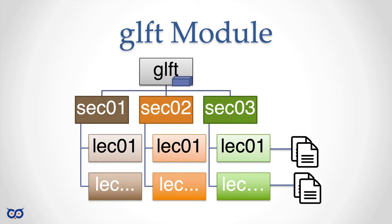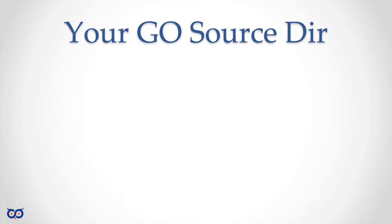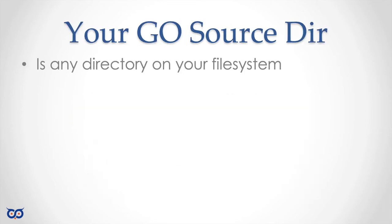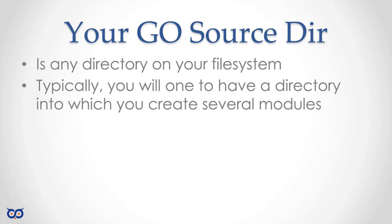When you clone the code for this course you'll see a module file. If you want to create your own directory, you can create a module file too — I recommend using modules. Your source code can be placed anywhere on your file system. Typically you'd want a parent directory containing several modules — for example, one for this course's code and another for other projects. We can call that your Go source directory.